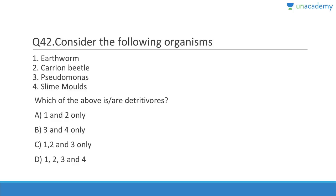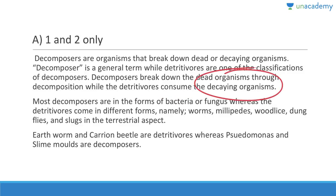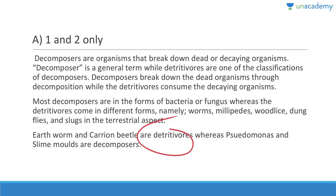Answer is A, one and two. Decomposers are organisms that break down decaying organisms — a general term. Detritivores are one classification that consumes decaying organisms. Earthworms and carrion beetles are detritivores — they consume the decaying organisms. Decomposers like Pseudomonas and slime molds merely break them down without consuming them.